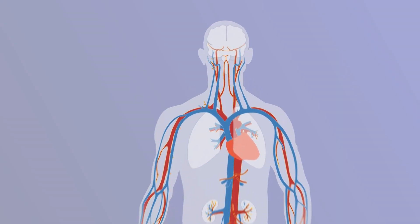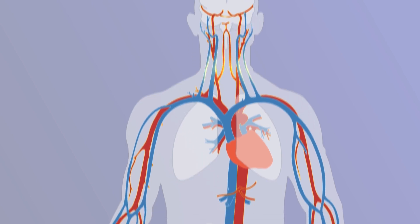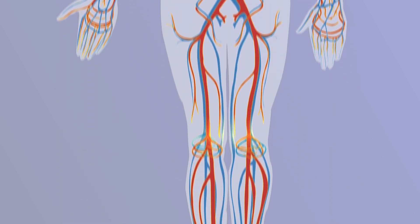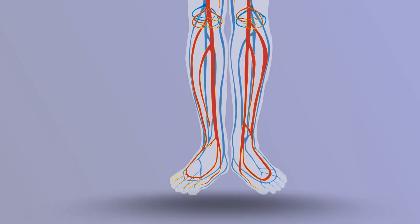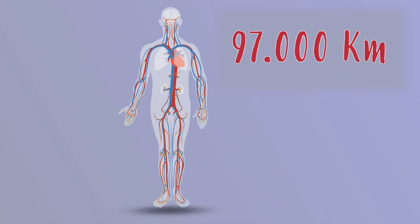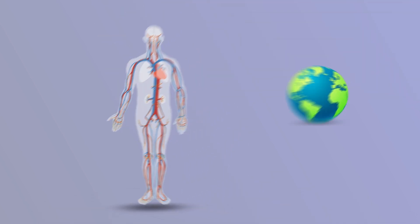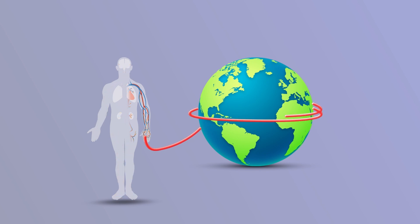I have a curiosity — do you know how much all of the arteries and veins would measure together put in single file? They would measure 96,000 kilometres, which would be equivalent to almost two and a half laps of the earth. It's incredible, right?